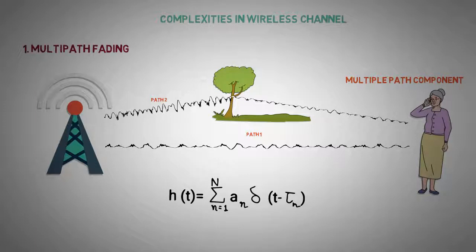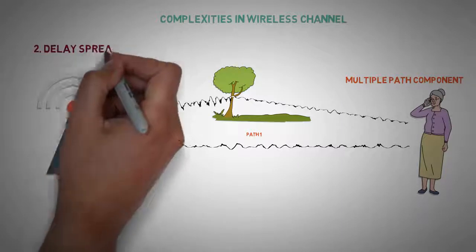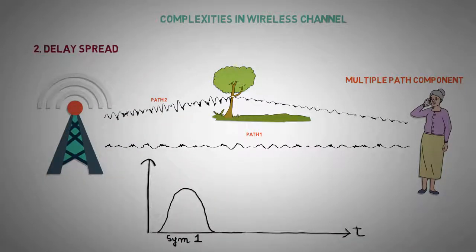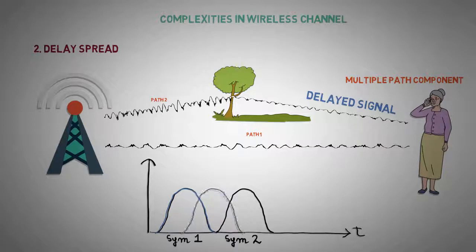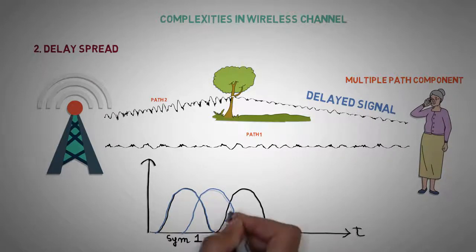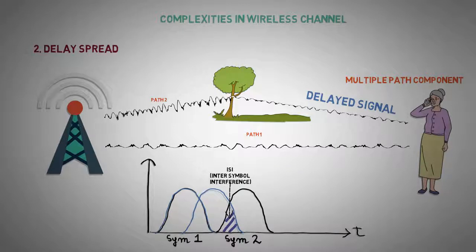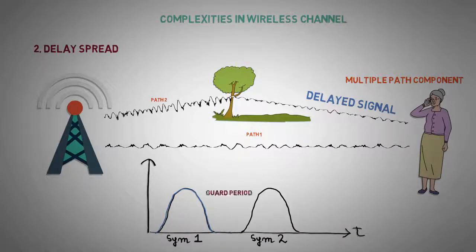This combined effect causes what we know as multipath fading. Delay spread. As a consequence of multipath propagation the duration of a symbol gets extended. This may interfere with the next symbol. This is called inter-symbol interference or crosstalk. Guard periods are introduced to avoid crosstalk.